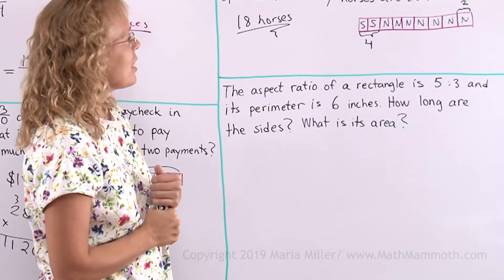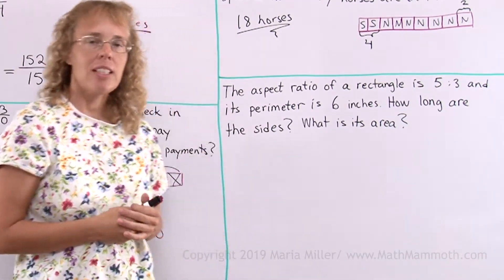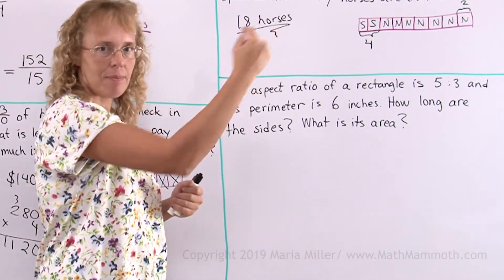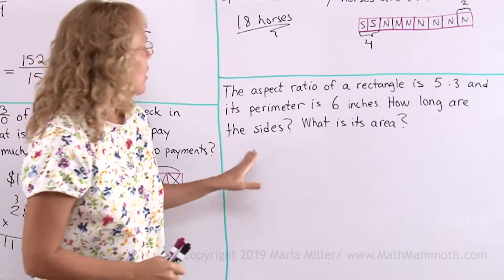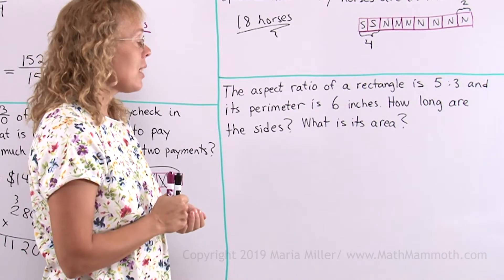The aspect ratio of a rectangle is 5 to 3. What's the aspect ratio of a rectangle? It's the ratio of its length to height, or you can think of it as width to height. And its perimeter is 6 inches. How long are the sides and what is its area?